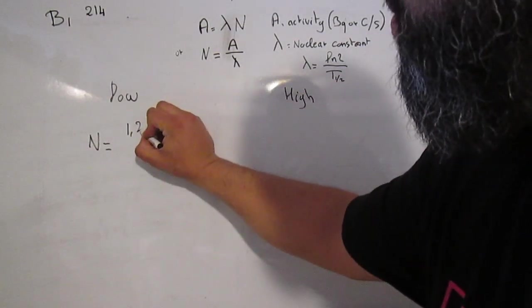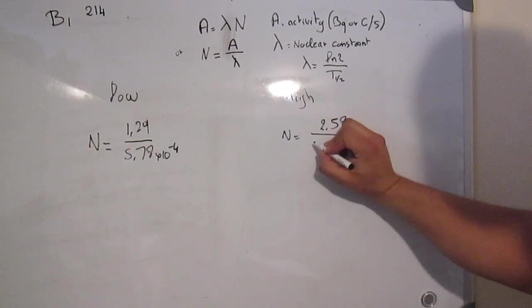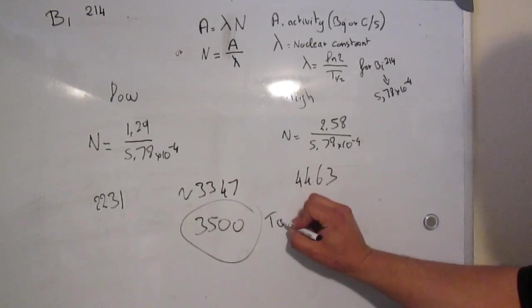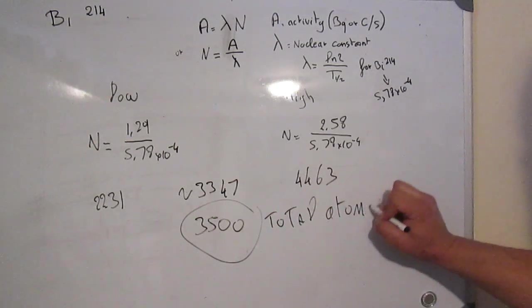So, my low estimate is 1.29 becquerels, and my high is about 258. Applying this equation gives us the total number of Bismuth-214 atoms in a sample. With a lower limit of about 2200 atoms, and a higher of somewhere around 4400. So, in the neighborhood of 3500 atoms is our answer.